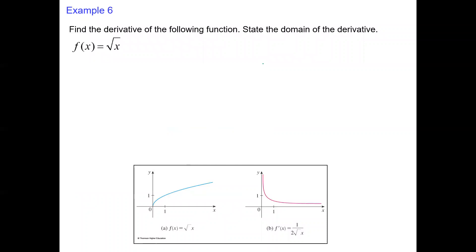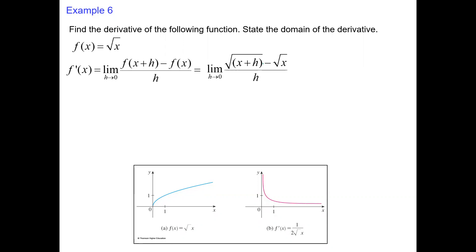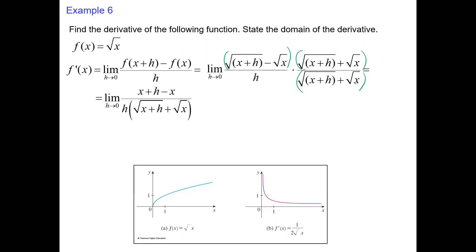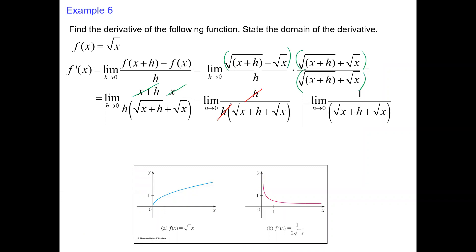Find the derivative of √x and state the domain. Using the limit definition: (√(x+h) minus √x) over h. We multiply by the conjugate expression. Distributing on top gives (x+h) minus x, which is h. The h in numerator and denominator cancel. Substituting h equals zero, we have √x plus √x equals 2√x in the denominator, giving 1 over 2√x.